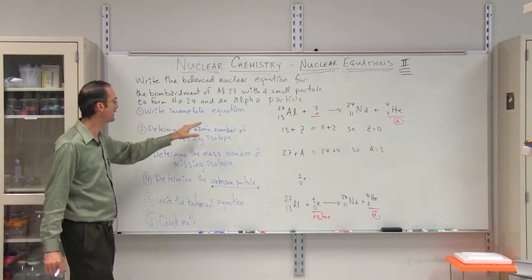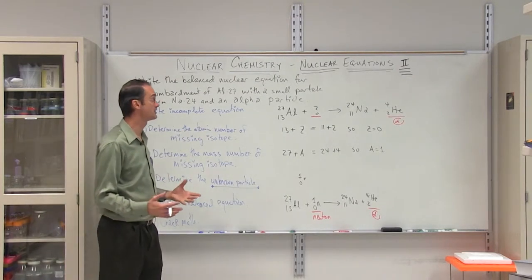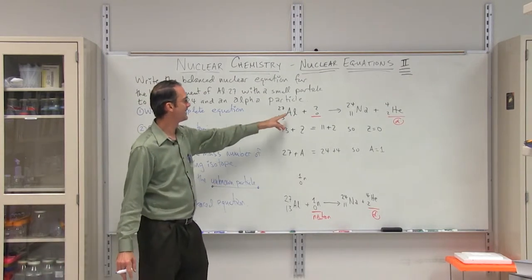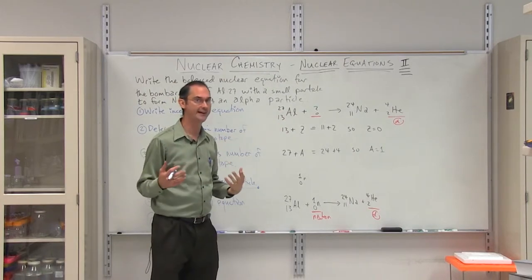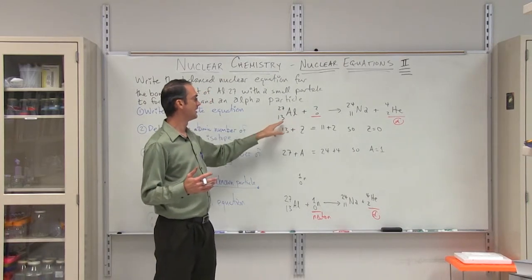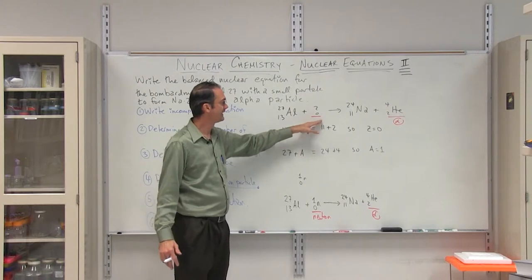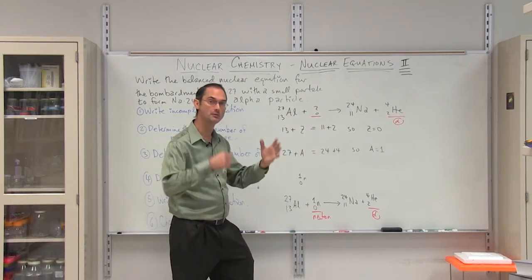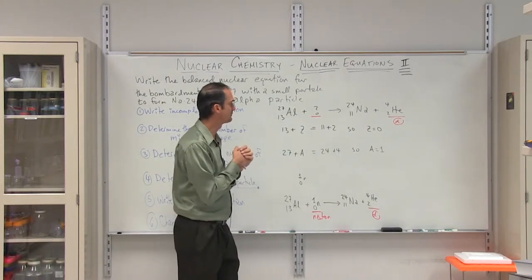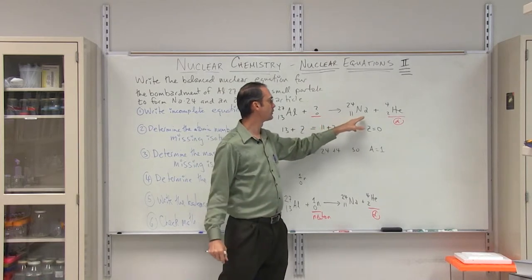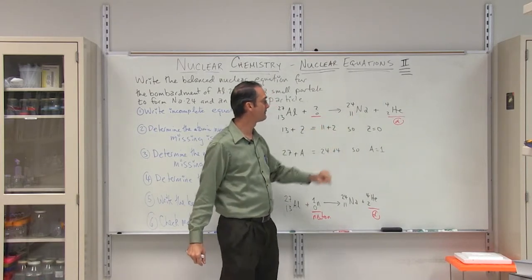The first thing to do is to write the incomplete equation. We have most of the information already. We have aluminum with a mass of 27, and if you look on the periodic table, you will see that aluminum's atomic number is 13. We're adding in an unknown particle that will probably be for a bombardment reaction of some type. And the reactants then will include sodium, we find the 11 from the periodic table.